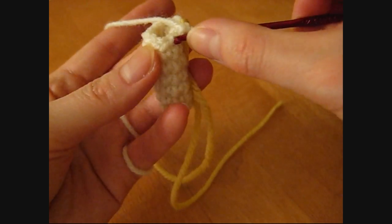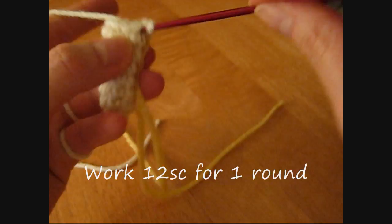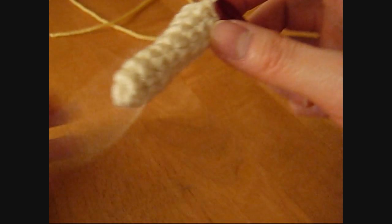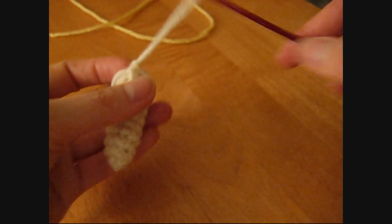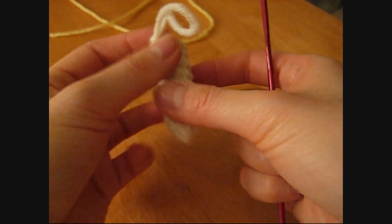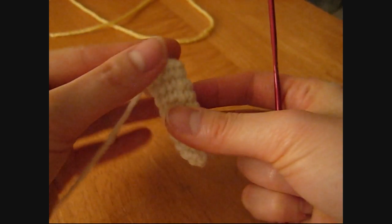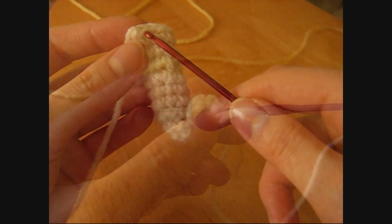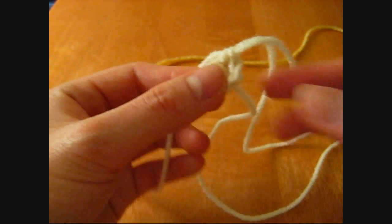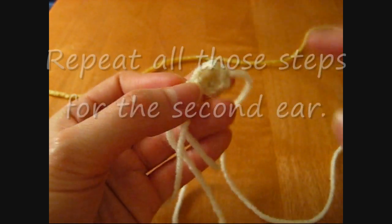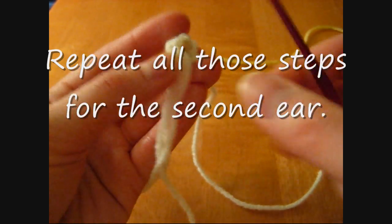Next, do 1 single crochet in each of the 12 stitches. This is going to be your last row. Finish off this ear by cutting off the yarn. Be sure to leave a good amount of yarn just in case you have to sew something closed. Then insert the free end of the yarn in the loop and pull. Repeat all of the steps you just did for the 2nd ear.